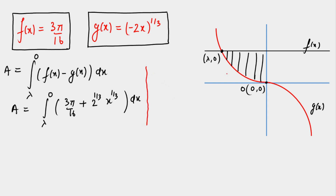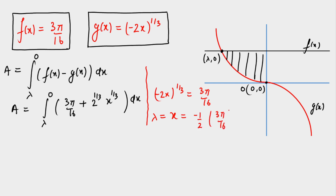To find λ, we equate the two curves: (−2x)^(1/3) = 3π/16. Solving, x = λ = −(1/2)(3π/16)³. This is the x-coordinate where the curves intersect.